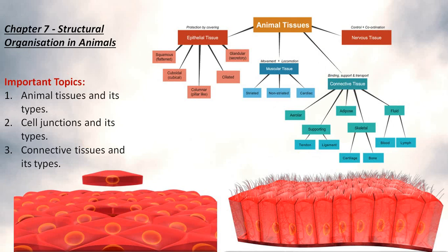Coming to Structural Organization in Animals, important topics are animal tissues and its types, different types of cell junctions and its types, connective tissue and its types. The preparation tips of Unit 2 are as follows.